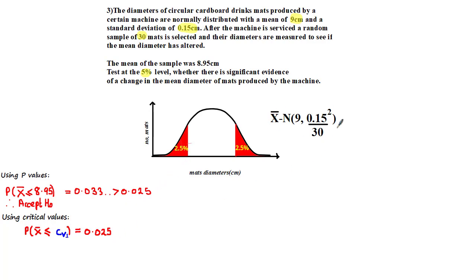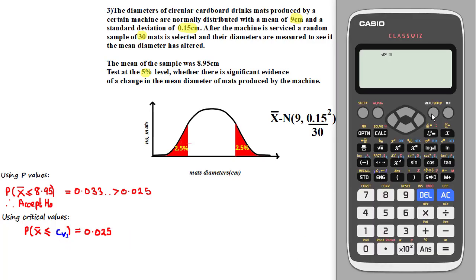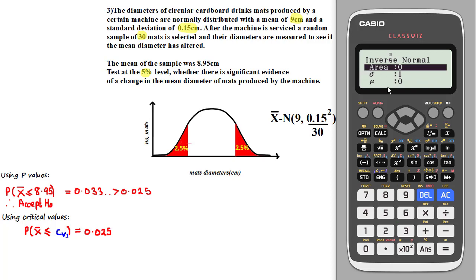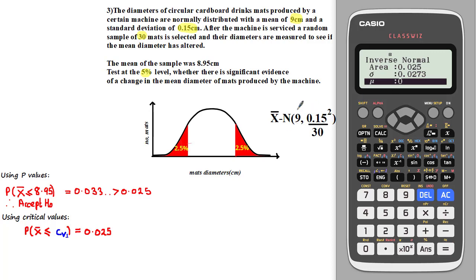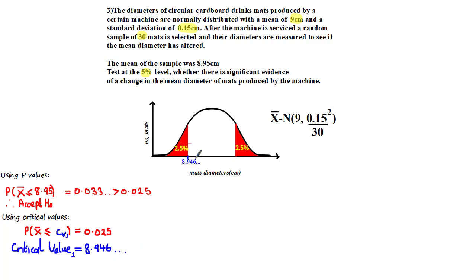To calculate the critical value for the lower tail, we need to find the critical value such that the p-value is equal to 0.025. Using our calculator, go to menu, click on 7 for distribution, click on 3 for the inverse normal function. For the area, as it's the lower tail, we can simply put in a value of 0.025. The standard deviation would be the square root of this value, which is 0.15 divided by the square root of 30, and the mean is equal to the population mean, which is 9. Working this out, we get a critical value of 8.946, and we can define the first critical region as the set of observed values that are less than or equal to 8.946.